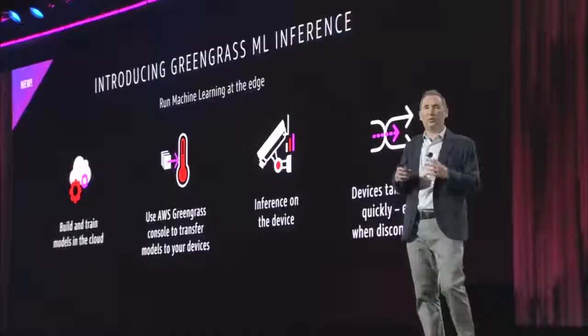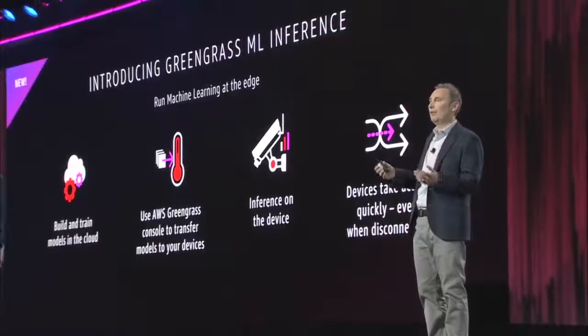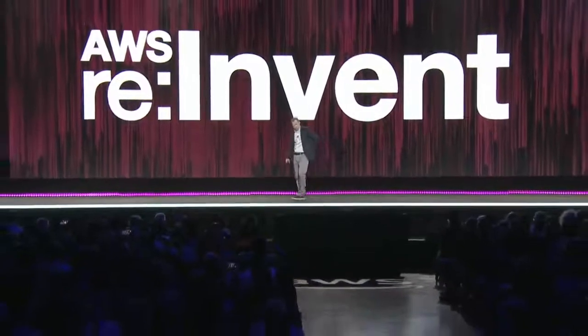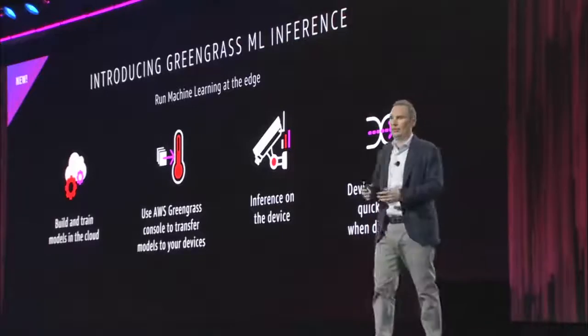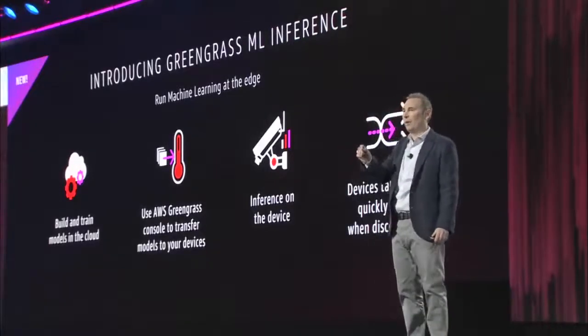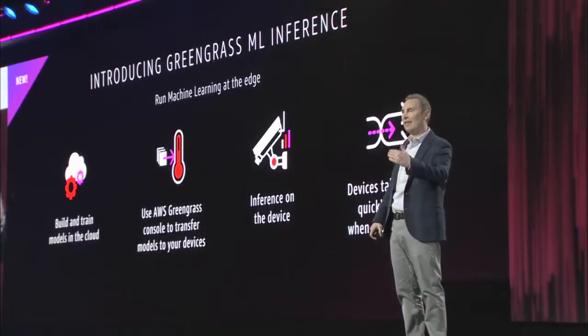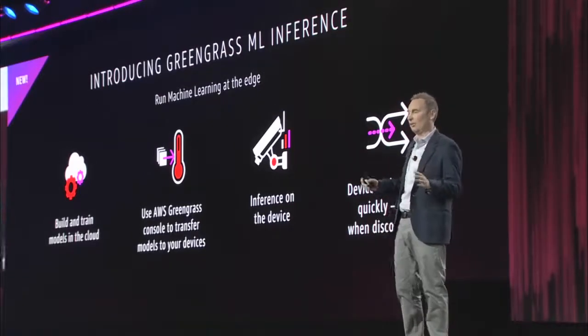I'm excited to introduce the preview of Greengrass ML Inference, which lets you run machine learning models and inferences at the edge. Today, as we talked about earlier in the machine learning part of the talk, the normal way this is done is you build these models, do all the training and tuning and deploy — and it's all done in the cloud. But there are a lot of customers who have devices where they want the models they've already spent time building to just spit out predictions at the edge on the device itself, without any latency going back to the cloud.